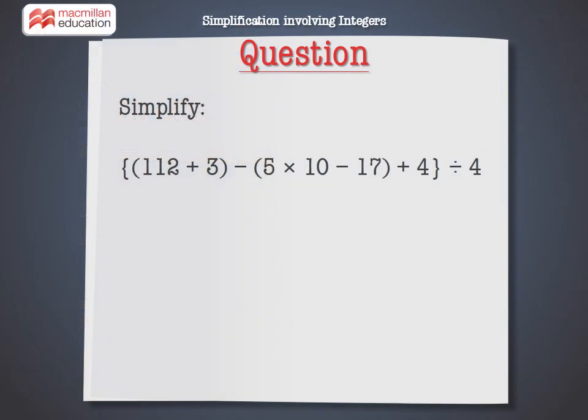Simplify 112 plus 3 minus 5 into 10 minus 17 plus 4 divided by 4. In this simplification, there are numbers with operational signs: plus, minus, multiplication, and division enclosed by brackets.